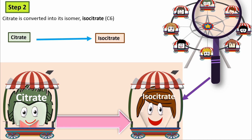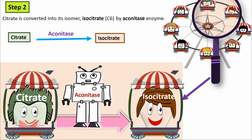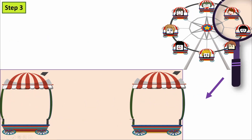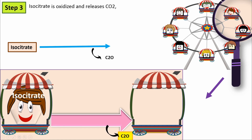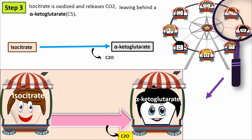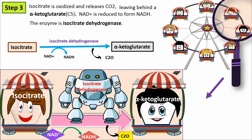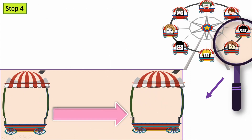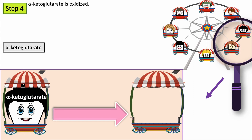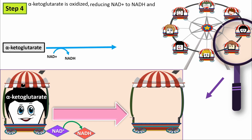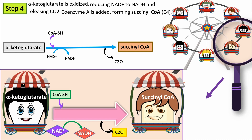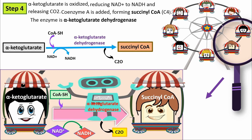Step two: Citrate is converted to its isomer isocitrate by the enzyme aconitase. Step three: Isocitrate is oxidized and releases CO2, leaving behind alpha-ketoglutarate. NAD+ is reduced to form NADH. The enzyme is isocitrate dehydrogenase. Step four: Alpha-ketoglutarate is oxidized, reducing NAD+ to NADH and releasing CO2. Coenzyme A is added, forming succinyl-CoA. The enzyme is alpha-ketoglutarate dehydrogenase.